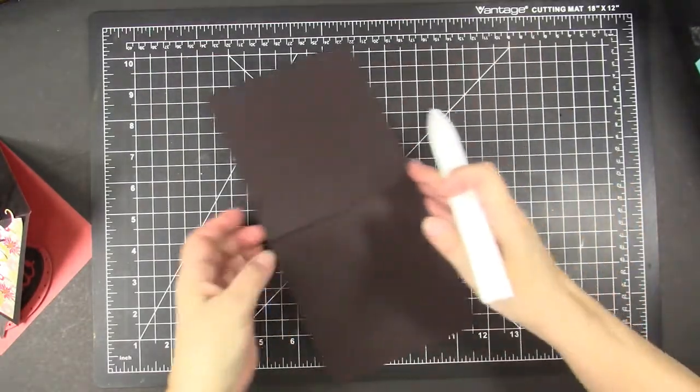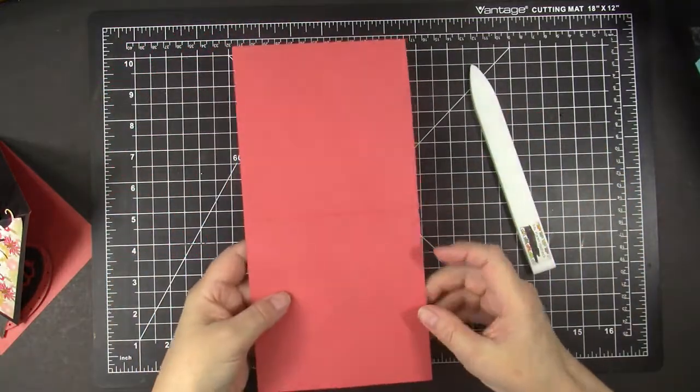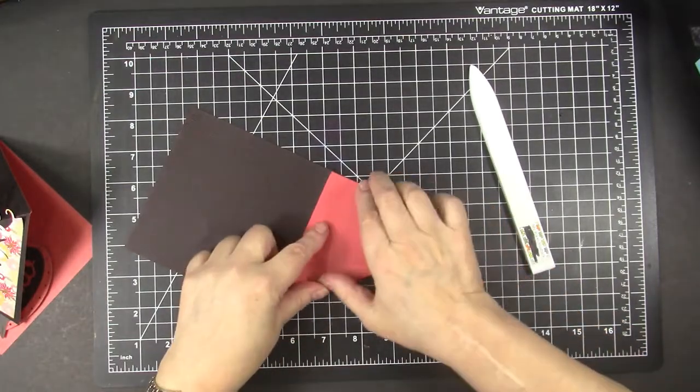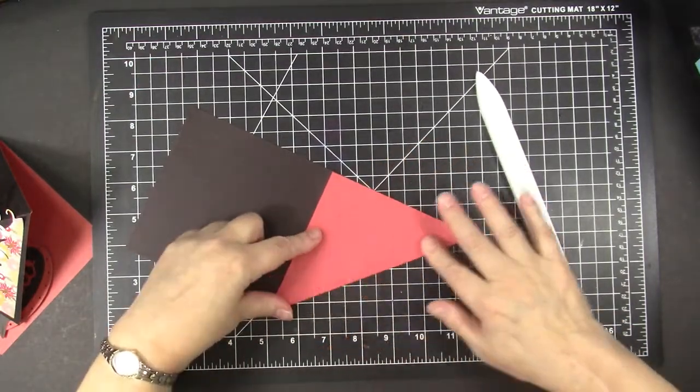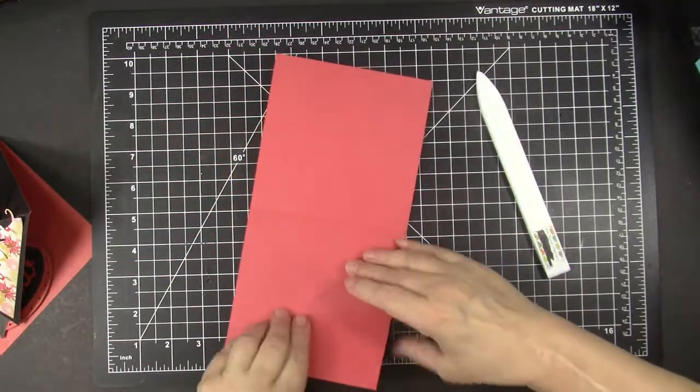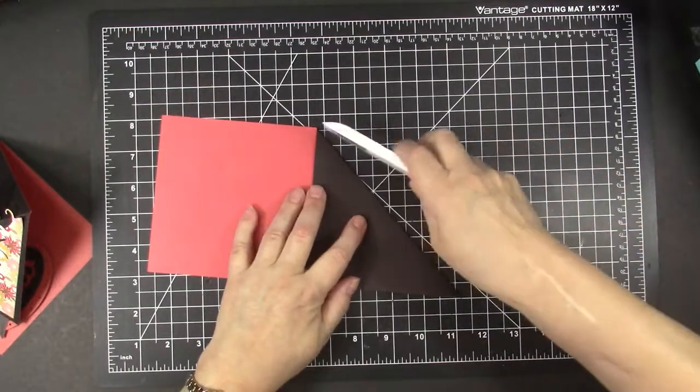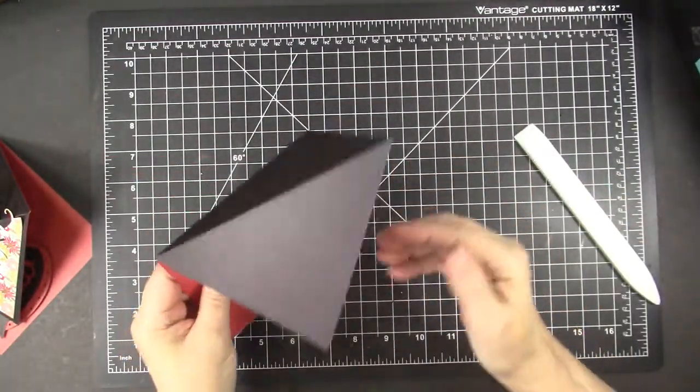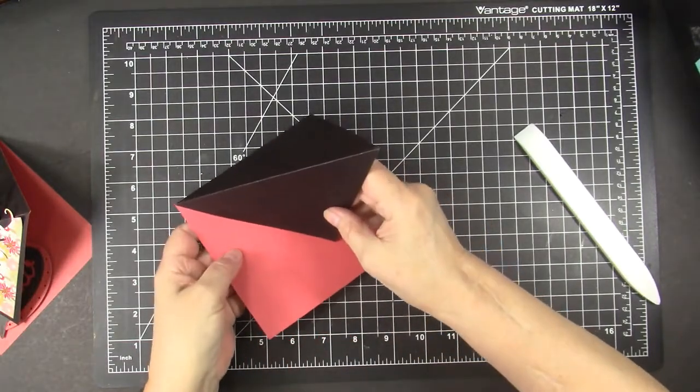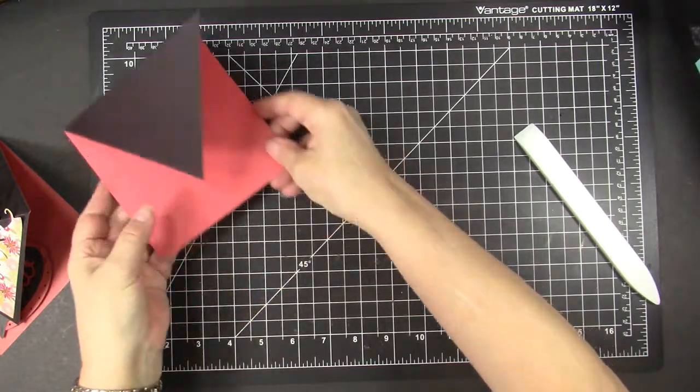Now this cardstock sometimes likes to crack. So one way to prevent that is to fold it the opposite way that you want, the opposite of the way that you want it to fold, and then go back and fold it that way. And most of the time that will prevent cracking on cardstock that likes to crack. So there is our folded easel part.